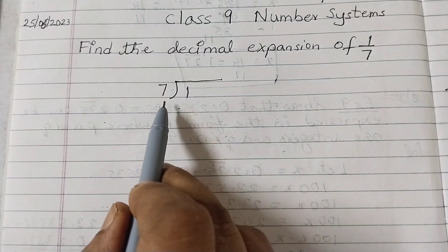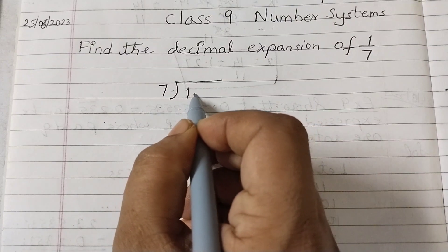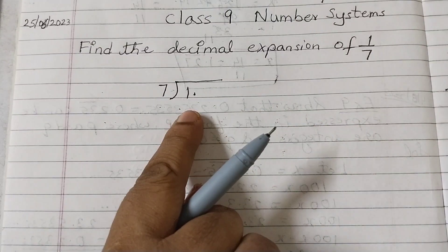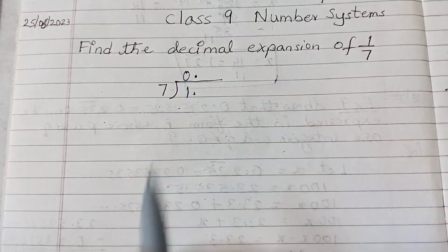1 is smaller than 7, so place a decimal point after 1. When you place a decimal point here, we will place a decimal point right above this. We can write it as 0 point.